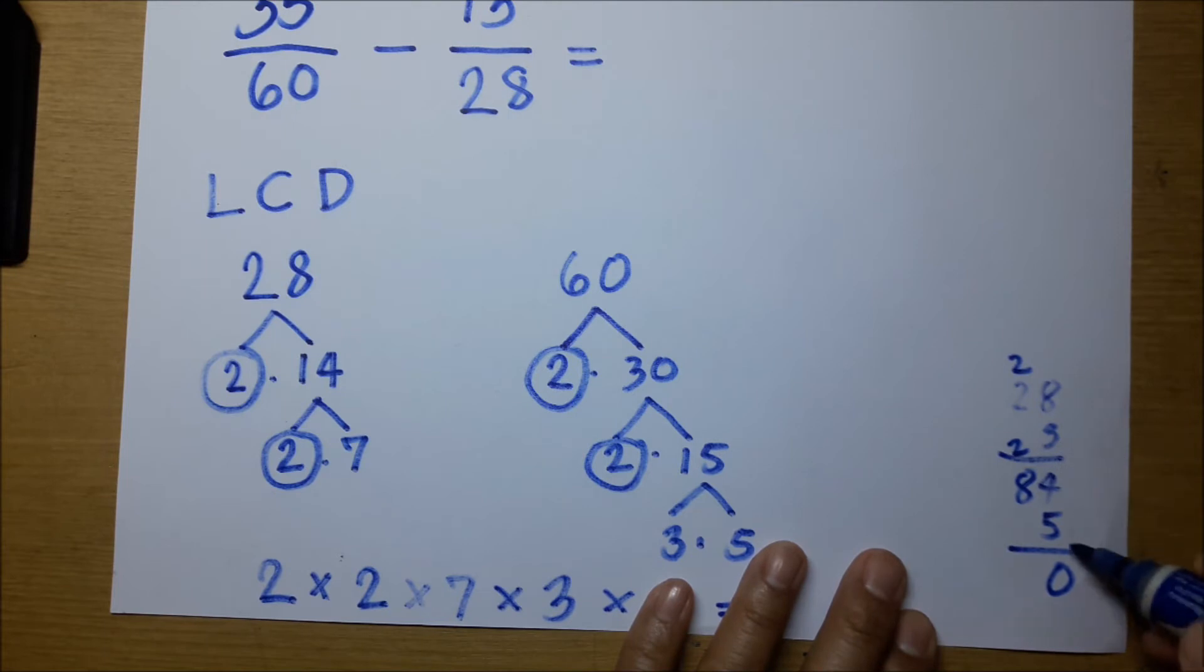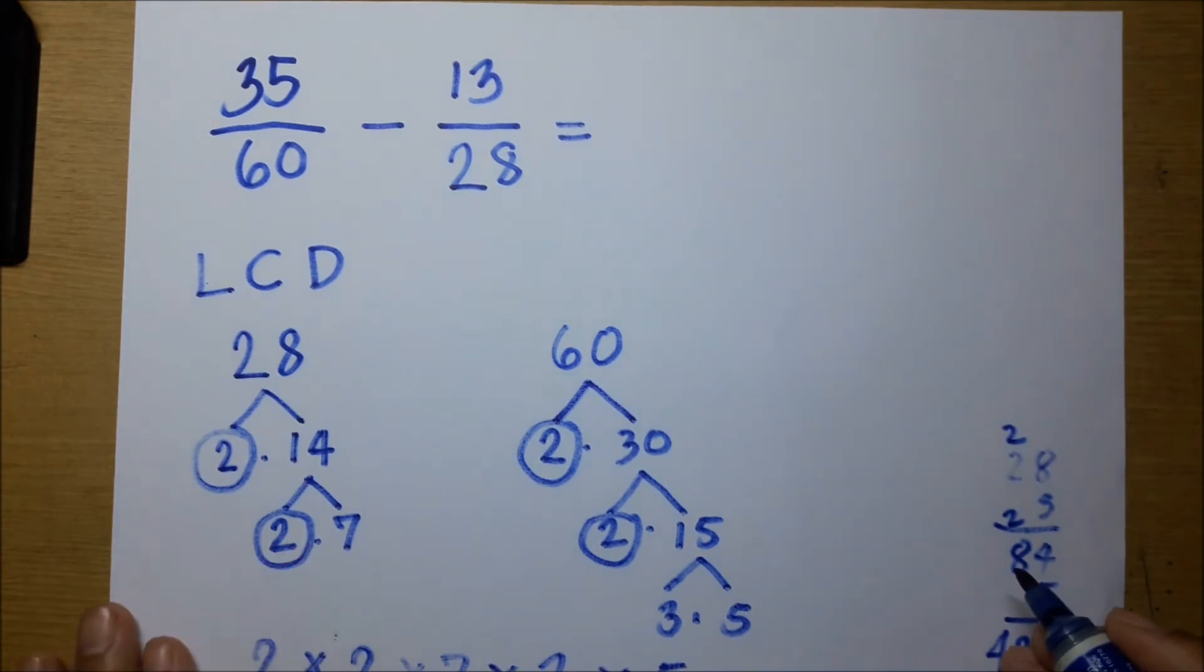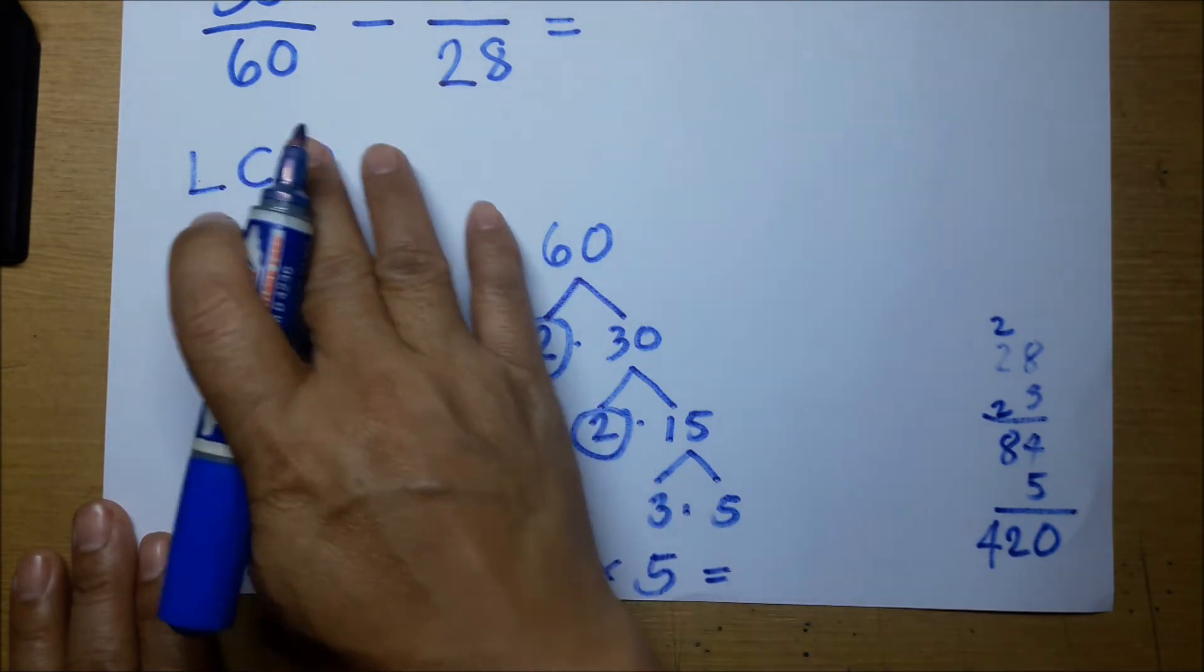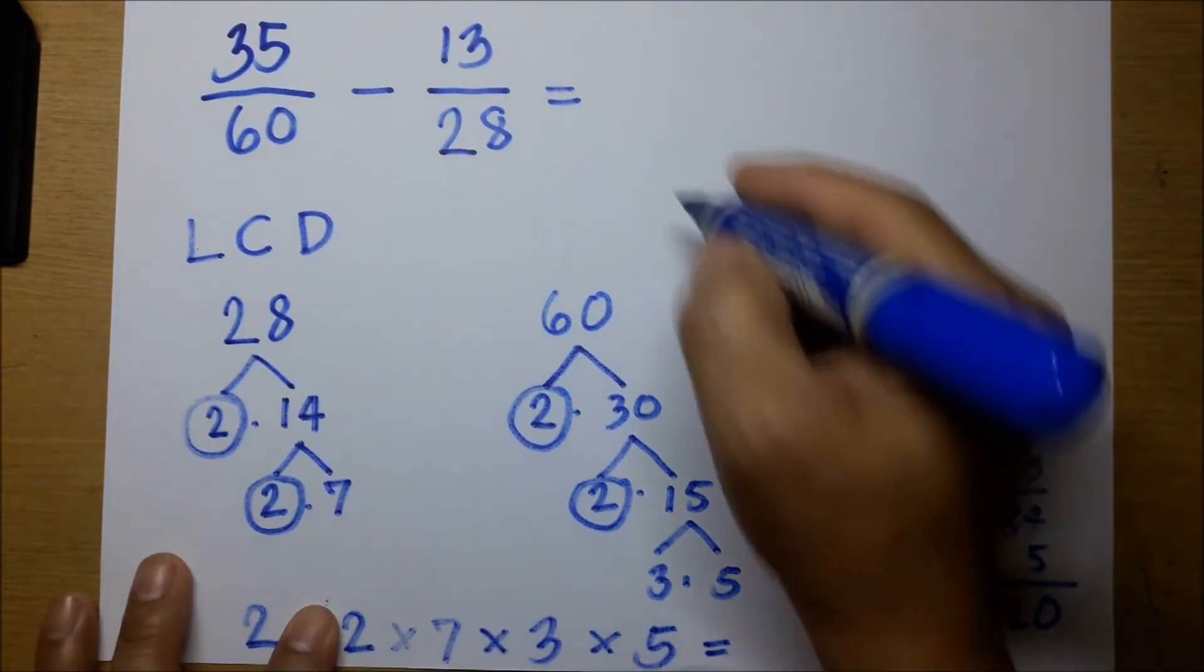84 times 5 gives us 420. So ang least common denominator ng 60 and 28 is 420. Sagutin natin ngayon using the LCD.